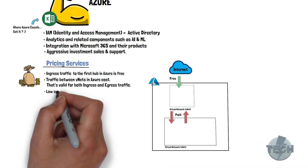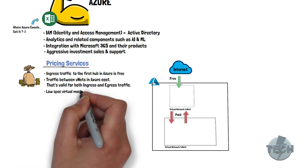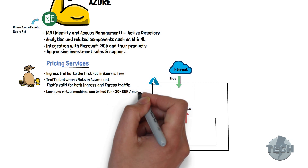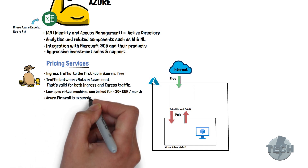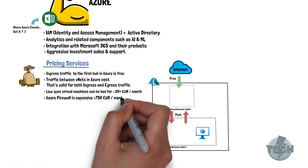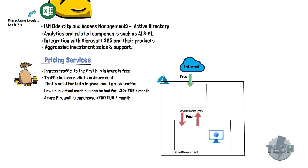Low-spec virtual machines can be had for about 30 euros a month. They can be interesting for non-critical workloads. These virtual machines can scale up along with the price to meet most of the requirements. Azure Firewall is expensive and you should count at least 700 euros a month for the standard SKU, so keep that in mind.